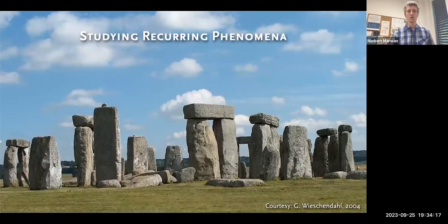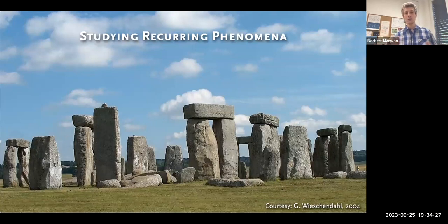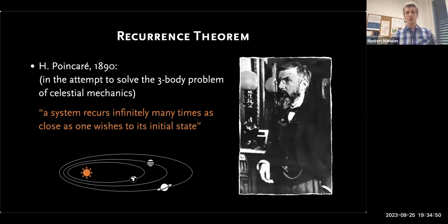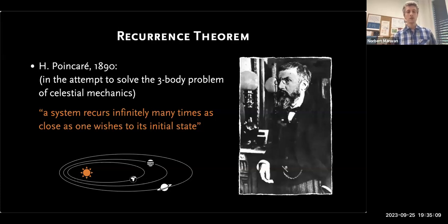This concept is very well known for a long time. Even our ancestors studied recurring phenomena for agricultural and astronomical purposes, using large machines. In ancient times, people worked with recurring phenomena — for example, more than 2000 years ago, studying chaotic circular movements in the term of pericoresis. You might know much better Henri Poincaré, the mathematician who tried to resolve the three-body problem. One of his findings was the so-called recurrence theorem, which simply states that you just need to wait long enough, and any dynamical system will come back to any previous state as close as we would like.